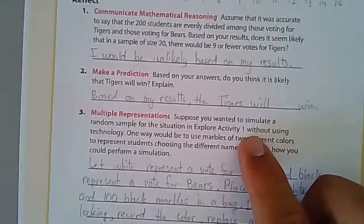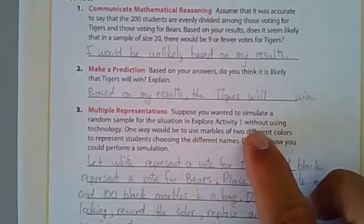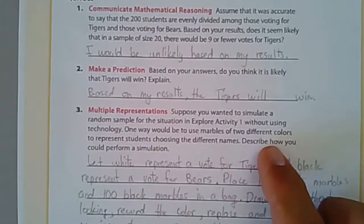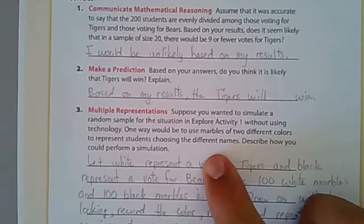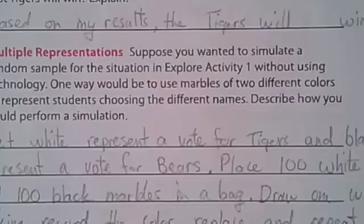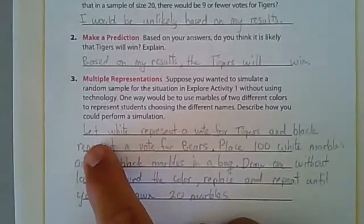Suppose you wanted to simulate a random sample for the situation in activity one without using technology. One way would be to use marbles of two different colors to represent students choosing the different names. Describe how you could perform the simulation.